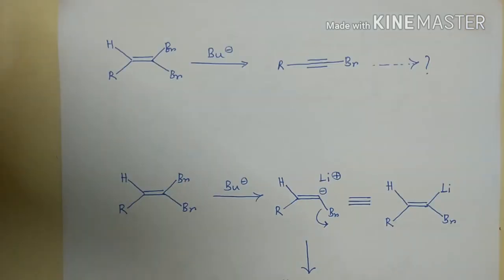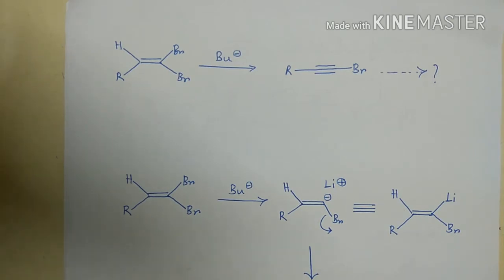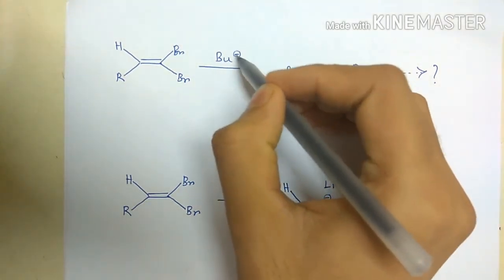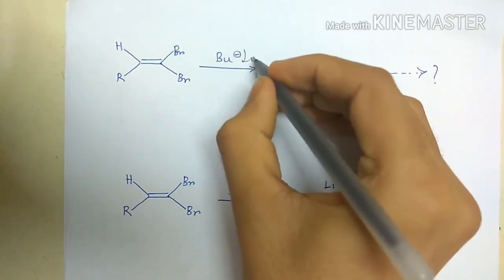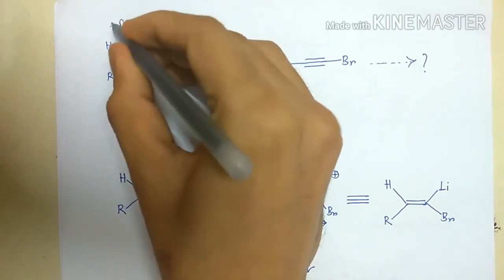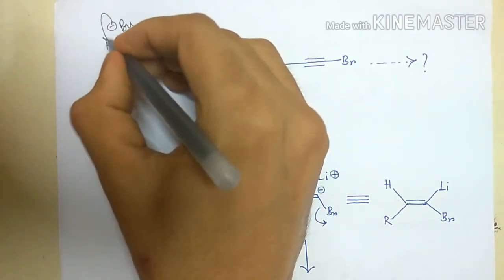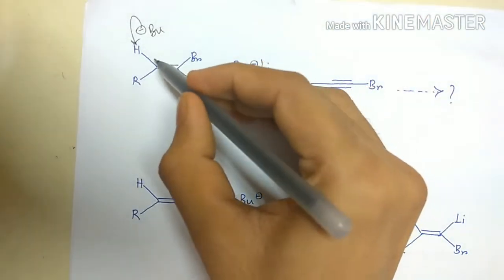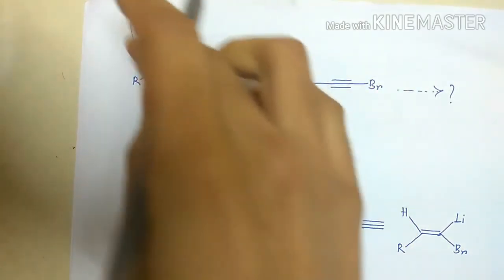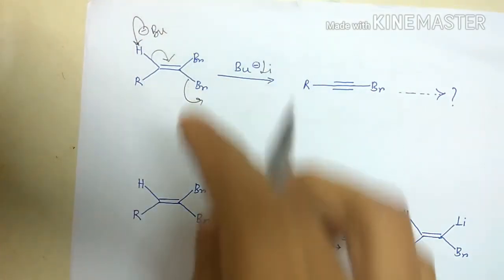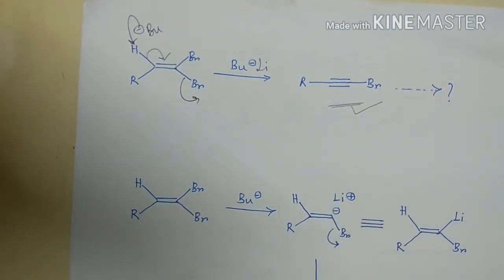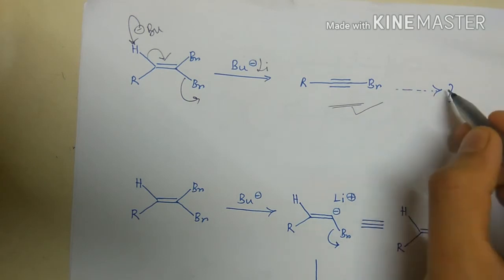The butyl lithium provides a butyl anion, and this anion can attack the vinylic hydrogen. By proceeding through an anti-periplanar transition state, this elimination gives the terminal alkyne product.